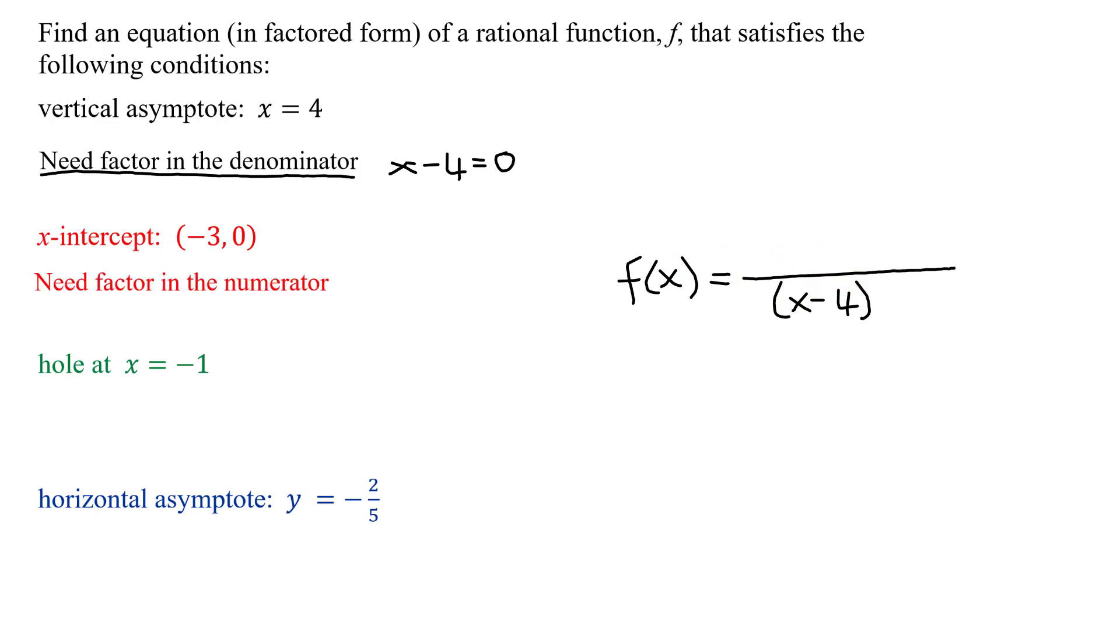So I'm going to need a factor in the numerator corresponding to this x-intercept. Remember that x-intercept means x equals negative 3. If I add 3 to both sides, I get x plus 3 equals 0. So the factor in the numerator that gives me that x-intercept is an x plus 3.